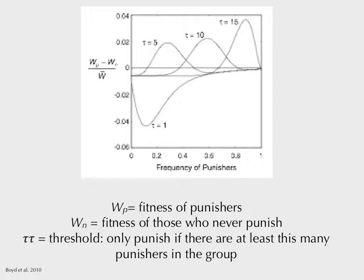You can also apply this to Wolbachia. In a low-Wolbachia population, having Wolbachia tends to lower fitness. But once you have enough Wolbachia in the population, if you don't have it you have fewer offspring on average. So this is a minimum invasion threshold — once you get over that line, it sweeps to fixation.